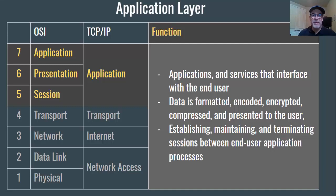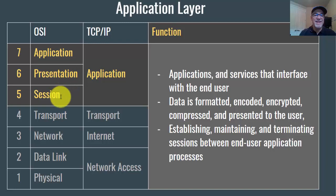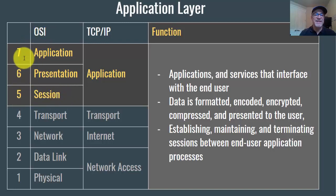The next chapter in the Cisco Academy is on the application layer — the application layer of the TCP/IP model. It refers to the application, presentation, and session layers in the OSI model: layers five, six, and seven.